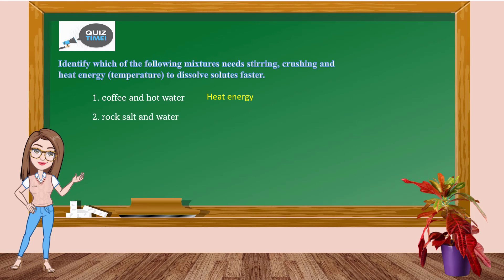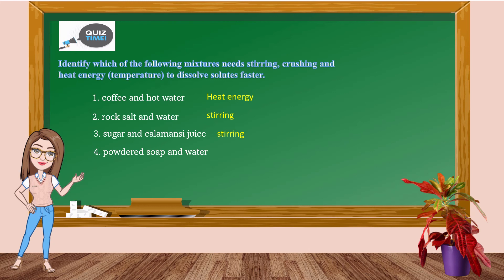Number 2: Rock salt and water. Correct! It needs stirring. Number 3: Sugar and kalamansi juice. Very good — stirring. Number 4: Powdered soap and water. You are right! It needs stirring.